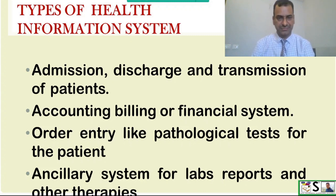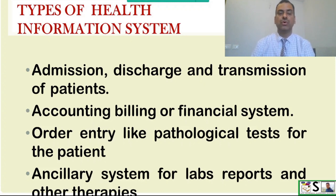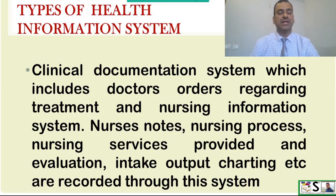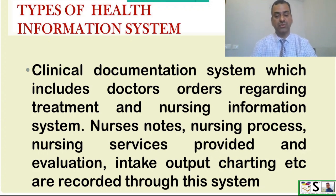MIS also provides the means through which activities can be monitored and information is distributed to management, employees, as well as clients or recipients of the services. Types of health information system include: admission, discharge and transmission of the patient, which is the base of the hospital information system; accounting, billing and financial system; order entry like pathological tests for the patient; ancillary treatment system for lab reports and other therapies; clinical documentation system which includes doctor's orders regarding treatment and nursing information system — nursing notes, nursing process, nursing services provided and evaluation, intake-output charting, and vital signs recording.